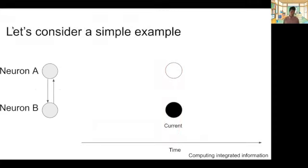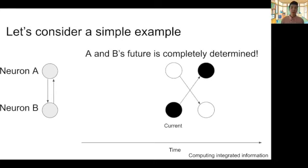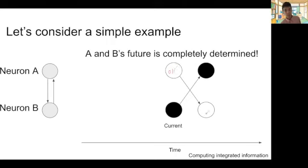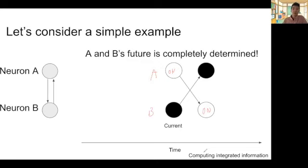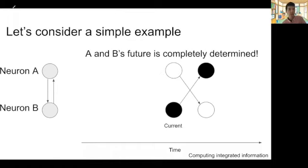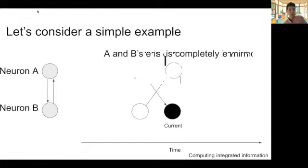Let's say the current state of the system is A on and B off. Then the next time step, because of the copy rule, A's state becomes off and B's state becomes on. The important thing is that the system AB's future state is completely determined by the current state — there's no ambiguity. There were previously four possible states, but now it's determined into one state. If you know information theory, this corresponds to the reduction of uncertainty.